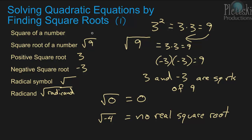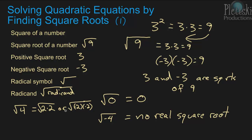That's the basic idea of what a square root is. One more example: the square root of 4. That equals either 2 times 2 or negative 2 times negative 2. So 4 is the same as 2 times 2 or negative 2 times negative 2, meaning the square root of 4 equals 2 or negative 2, because 2 squared equals 4 and negative 2 squared also equals 4.